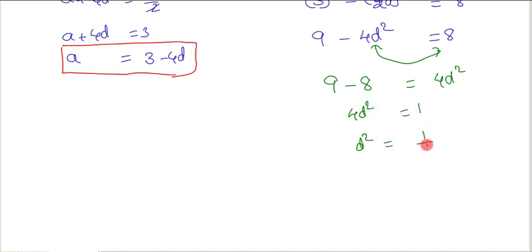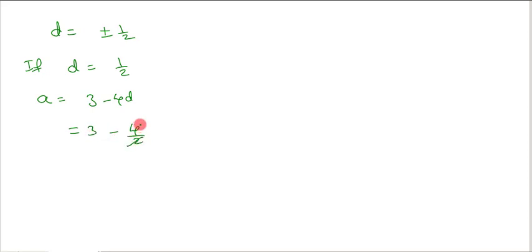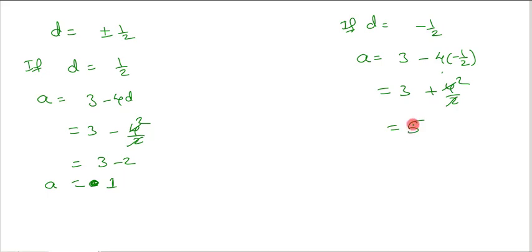From 4d² = 1, we get d² = 1/4, so d = ±1/2. If d = +1/2, then a = 3 − 4(1/2) = 3 − 2 = 1. If d = −1/2, then a = 3 − 4(−1/2) = 3 + 2 = 5.